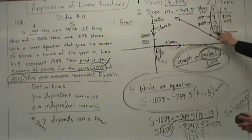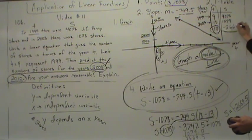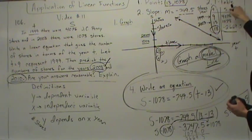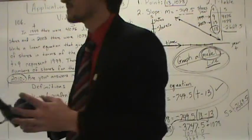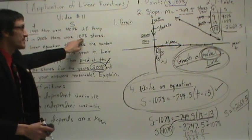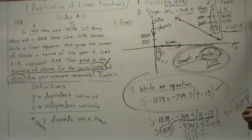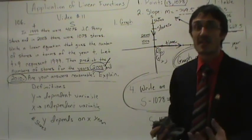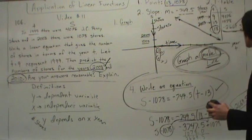So what does this mean? It means that in 2008 there were negative 2,669.5 stores. Does this make sense? We had 4,076 stores, then 1,078 stores — is it possible to have a negative number of stores? No. The least number of stores you can have is zero. So this does not make sense.